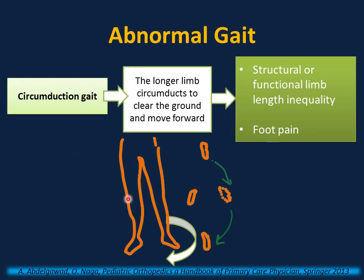Circumduction gait occurs during the swing phase, where the longer limb circumducts — swinging around and to the side to clear the ground and move forward. Instead of moving forward directly, the limb swings around to the side. This can be caused by structural or functional limb length inequality or even foot pain.